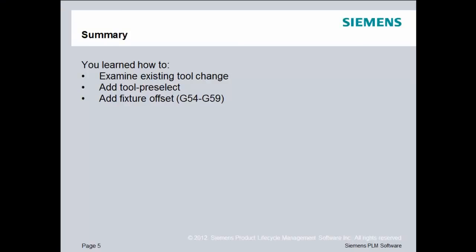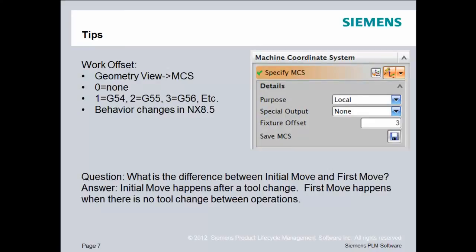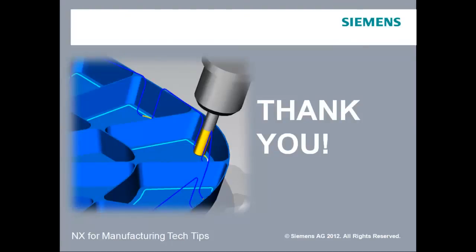In this lesson, you learned how to examine an existing tool change and modify it by adding a tool pre-select. We also explored how to add fixture offset numbers to the NC program. Under the Work Offset view — accessed via Geometry view and then MCS — the number 0 means none or G53, 1 is G54, 2 is G55, 3 is G56, and so on up to G59. Note that behavior will change in NX 8.5, so stay tuned to the documents for changes. To review: the initial move happens after a tool change, and the first move happens when there is no tool change. Thanks for viewing. Our next lesson will be Beginning TCL.